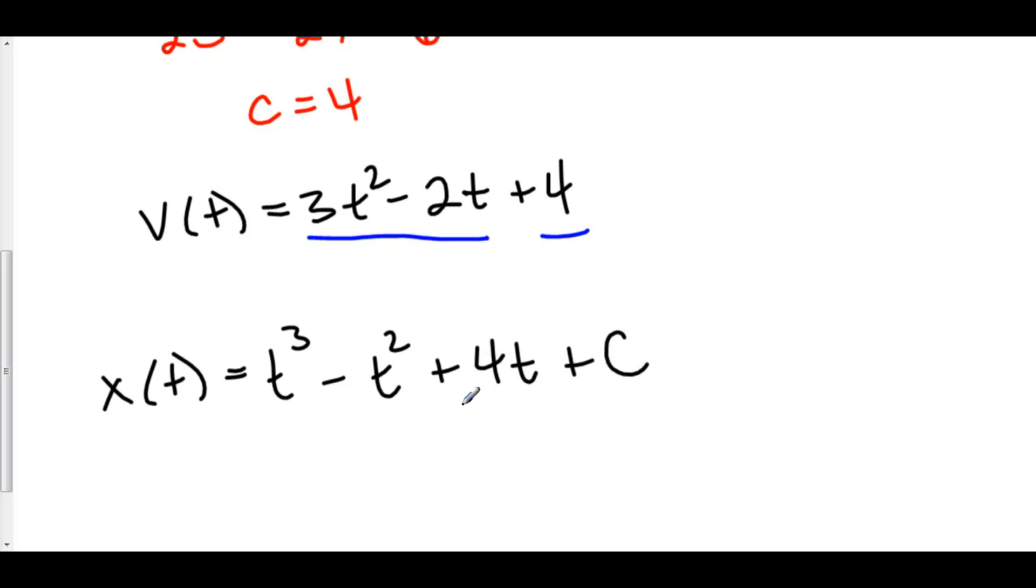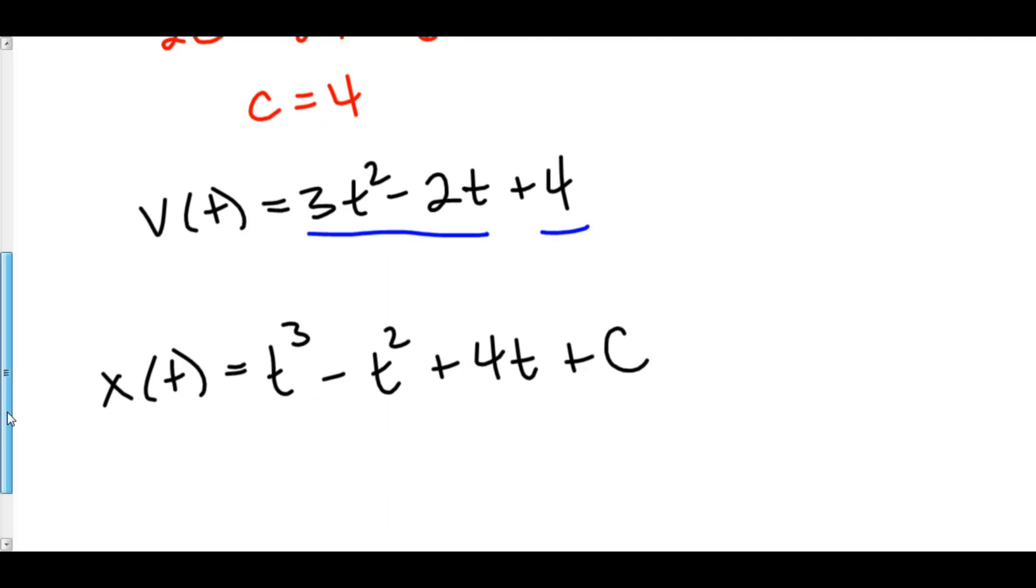And once again, if you were to plug zero into t, you would find that c would be your initial position. So once again, this c denotes the actual position at time zero. And everything else in here, this antiderivative is the net change, is how much it changed from zero to wherever you want to go.